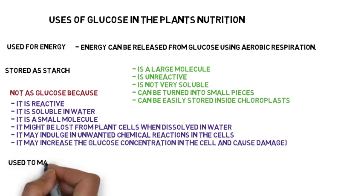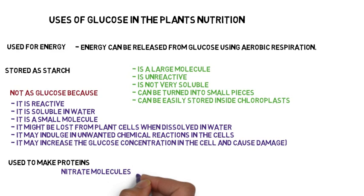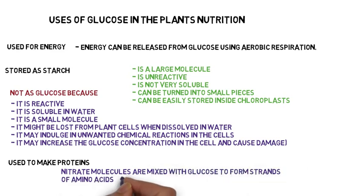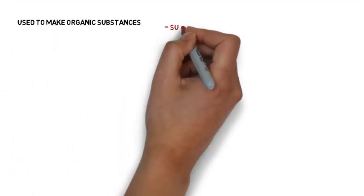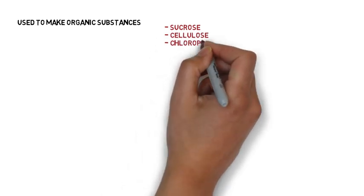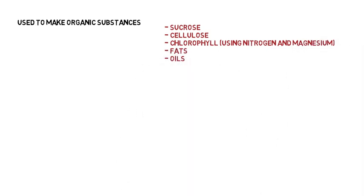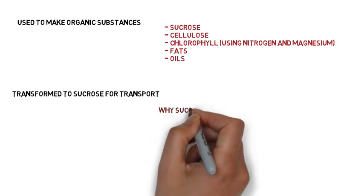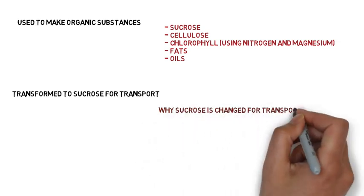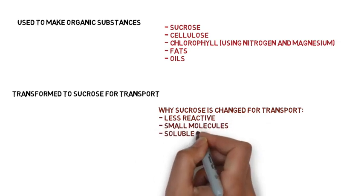Glucose is used to make proteins: nitrate molecules are mixed with glucose to form strands of amino acids which are bound into proteins. It is also used to make organic substances such as sucrose, cellulose, chlorophyll, fats and oils. Glucose is transformed into sucrose for transport because sucrose is less reactive, has small molecules, and is soluble in the sap in phloem vessels.